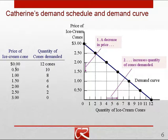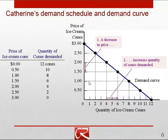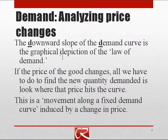On the left-hand side of this slide we have the information from the demand schedule, and on the right-hand side you can see that we've graphed that information to make a demand curve. The demand curve depicts how much quantity is demanded at every price. At a price of two dollars we have a quantity demanded of four, and at a price of one dollar we have a quantity demanded of eight.